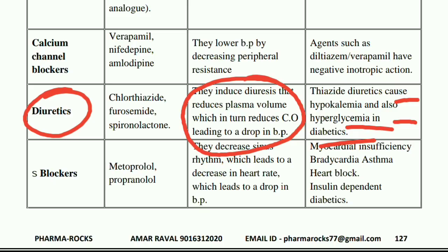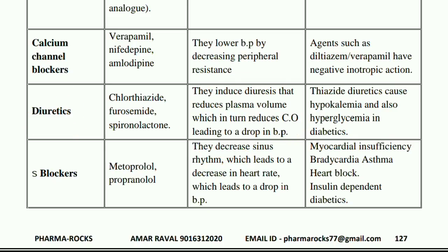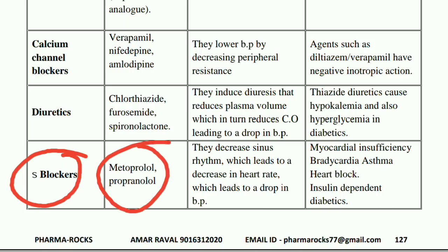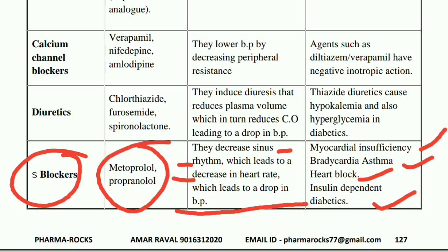Next is beta blockers. Under beta blockers, the drugs used are metoprolol and propranolol. They decrease sinus rhythm, which leads to a decrease in heart rate, which leads to a drop in blood pressure. Their side effects are myocardial insufficiency, bradycardia, asthma, heart block, and insulin-dependent diabetes.